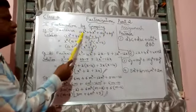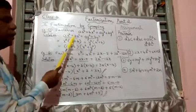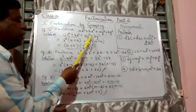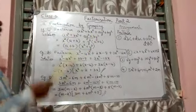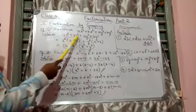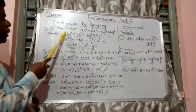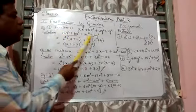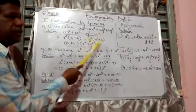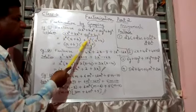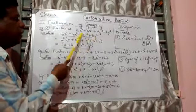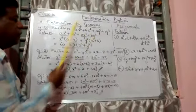So group them: the first term and second term in one group, and the third term and fourth term in another group. Here x² is taken out because it is common. What remains is a plus b. Y² is common in the second part, so plus y² outside — a plus b remains.